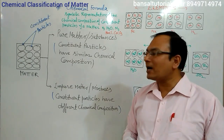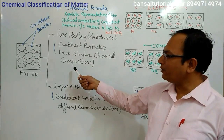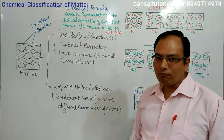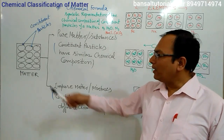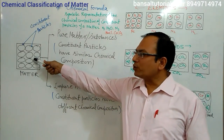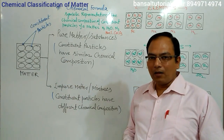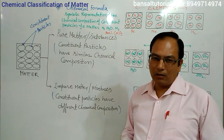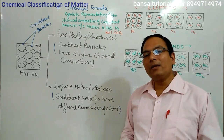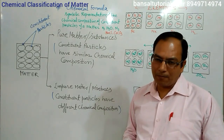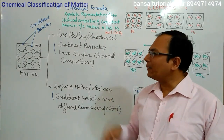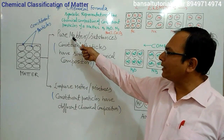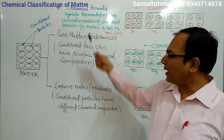Now, let's start our main topic. Today's main topic is the chemical classification of matter. Students, you know that every matter is composed of constituent particles. These constituent particles are called chemicals, and these chemicals may be atoms, molecules or ions. On the basis of the chemical composition of these constituent particles, matter can be classified into two categories: pure matter and impure matter.